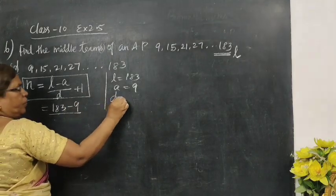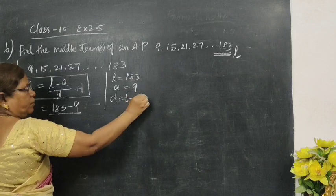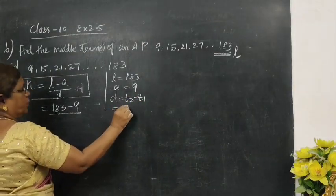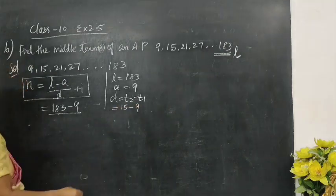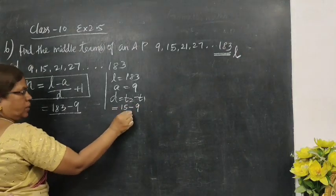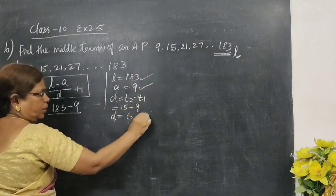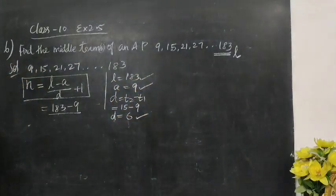Then, what is d? d equals to formula, T2 minus T1. T2 is 15 minus T1 is 9. So, that is equal to 6. This is our d. So, we know L and we know A and we know d.